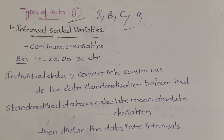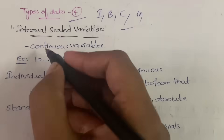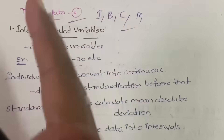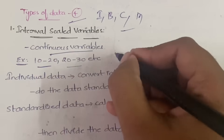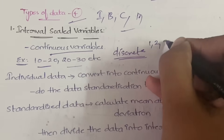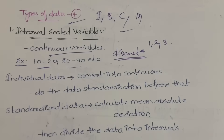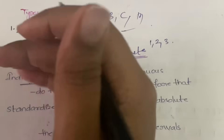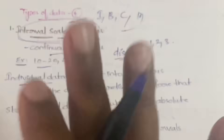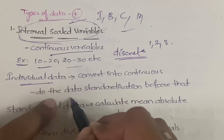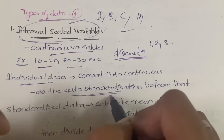First, interval scale variables. These are variables divided into intervals — for example, 10 to 20 is one interval, 20 to 30 is another. Only continuous variables are present; discrete variables (like 1, 2, 3 as separate values) are not used here. To convert individual data into interval scale variables, you first need to perform data standardization.